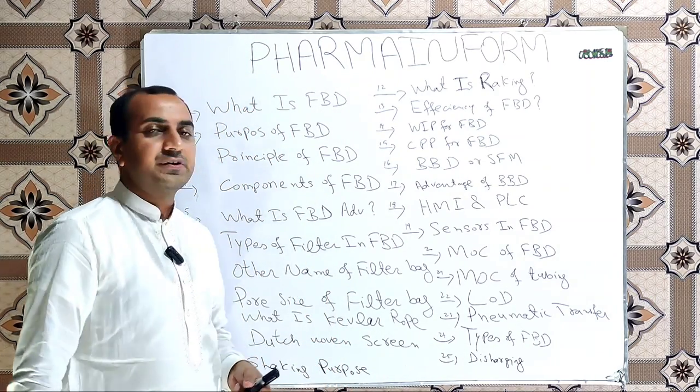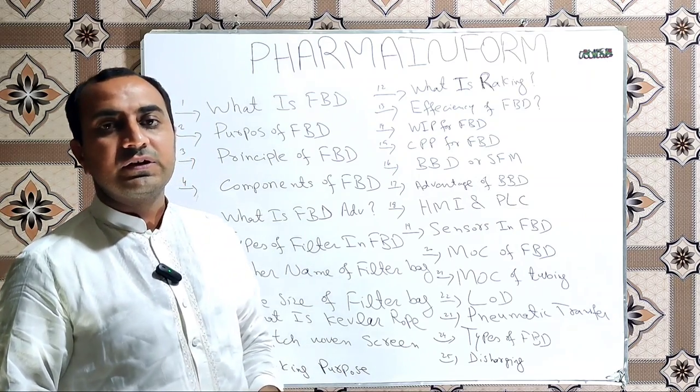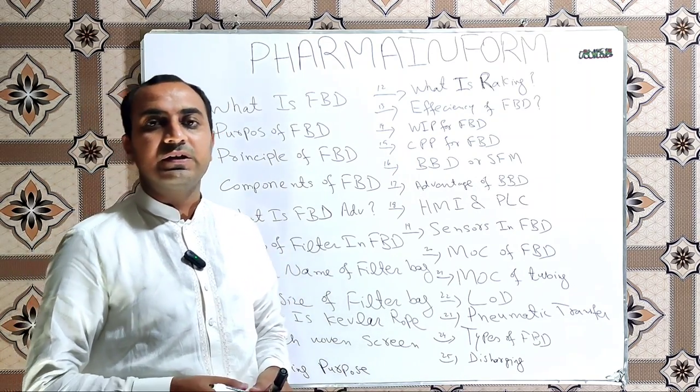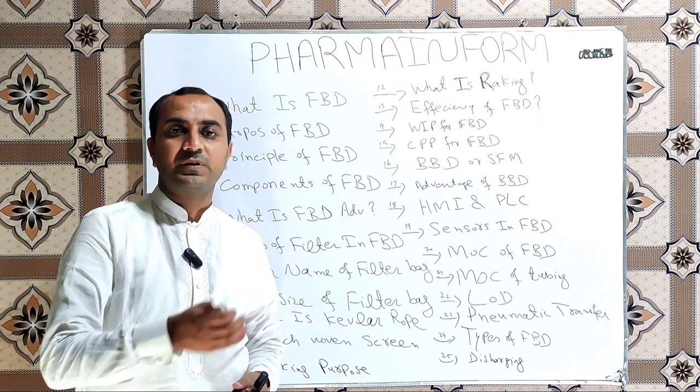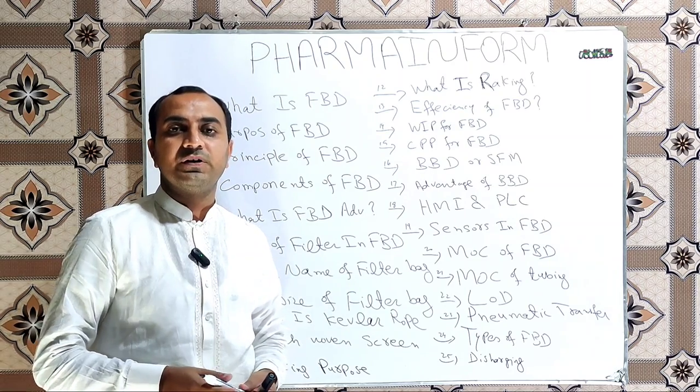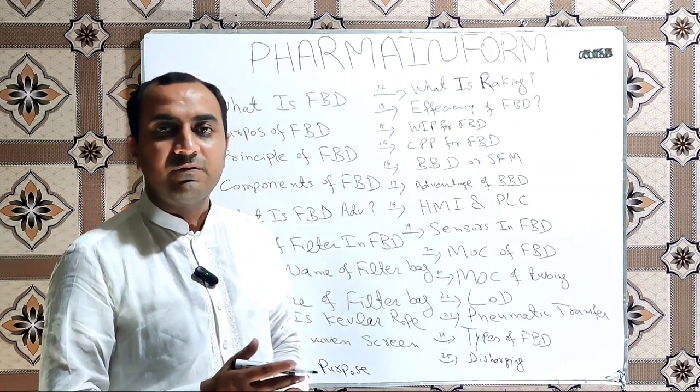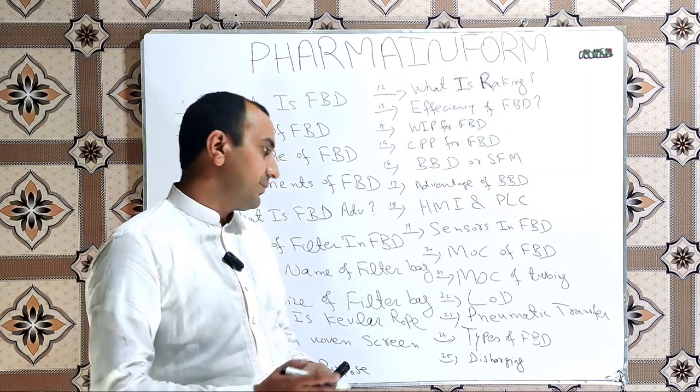What are the types of filters in FBD? Basically there are two types of filters available in FBD. One FBD has cloth filters and one FBD has SS cartridge filters.